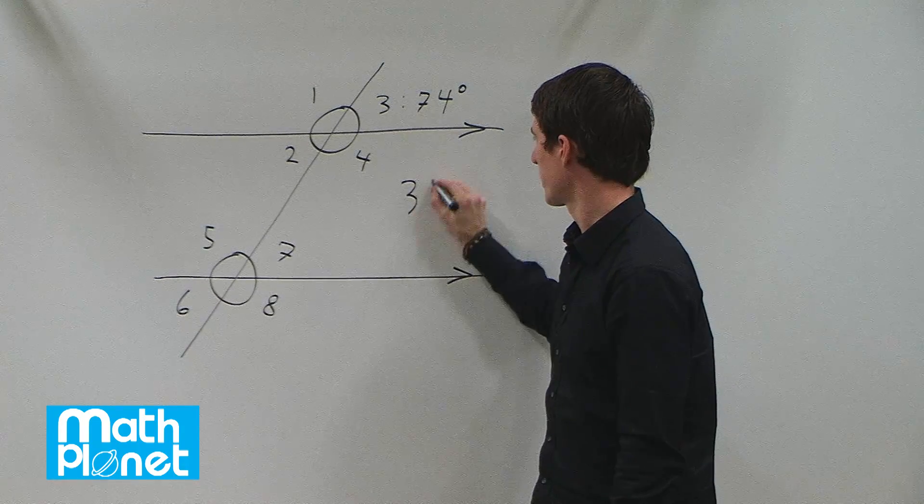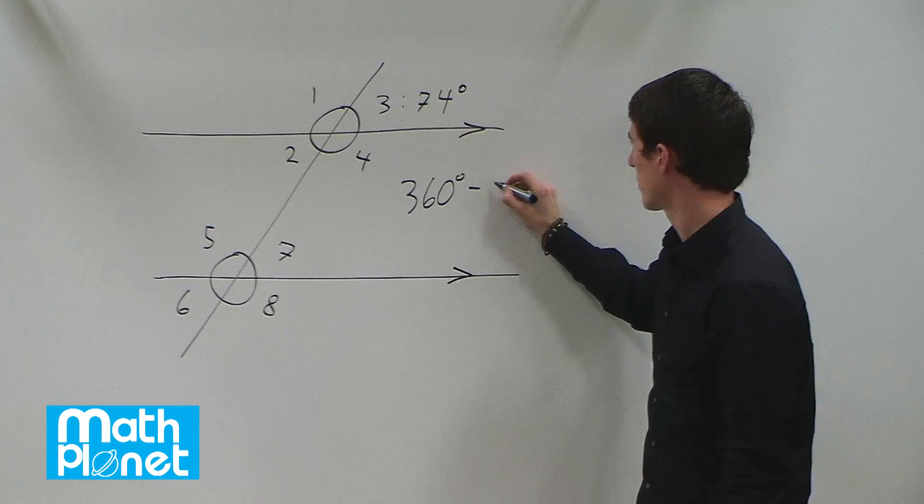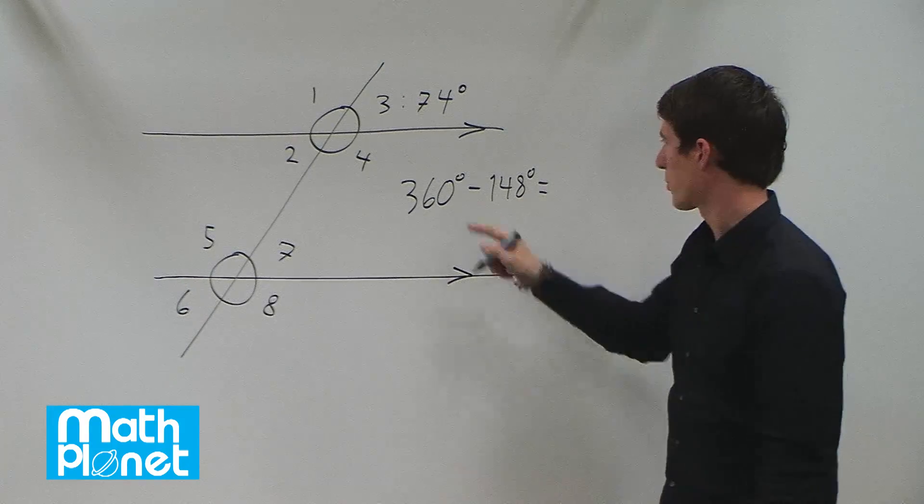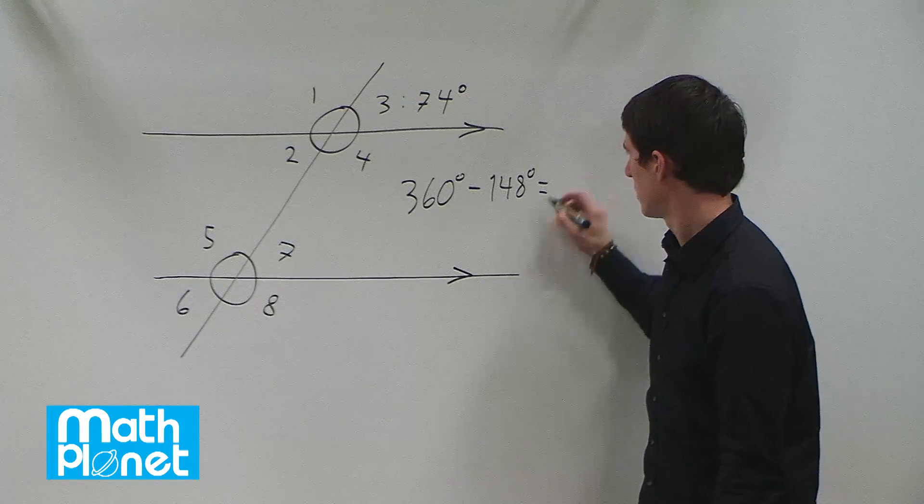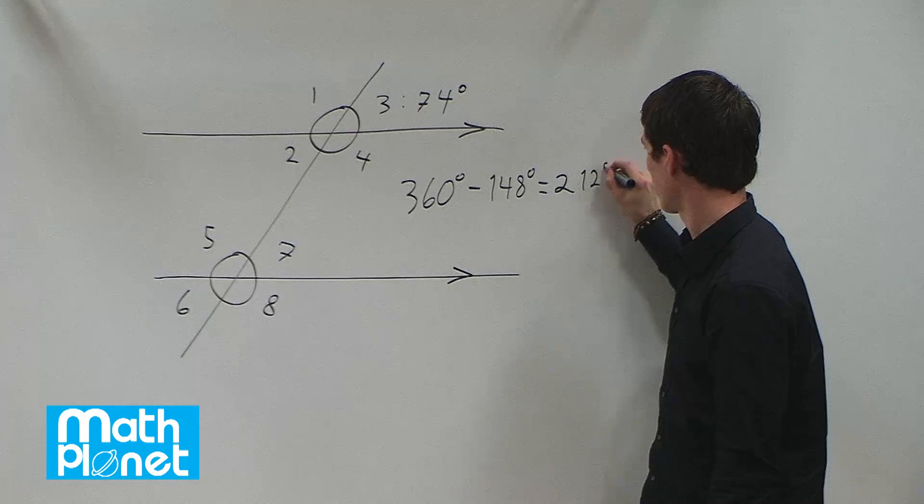we can say 360 degrees minus 74 times 2 is 148. So 360 degrees minus 148 simply gives us 212 degrees.